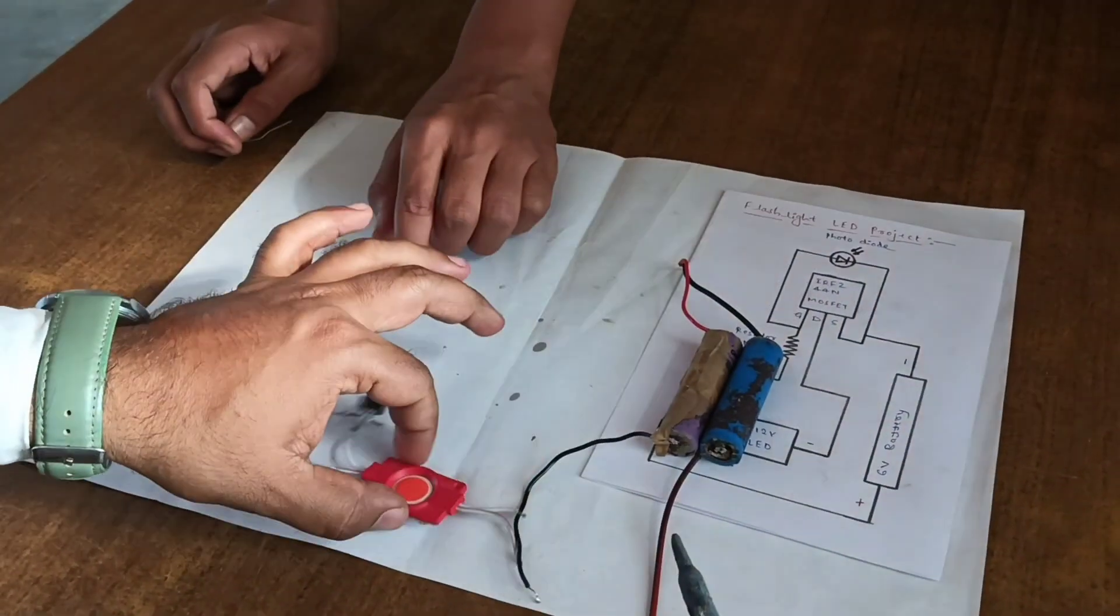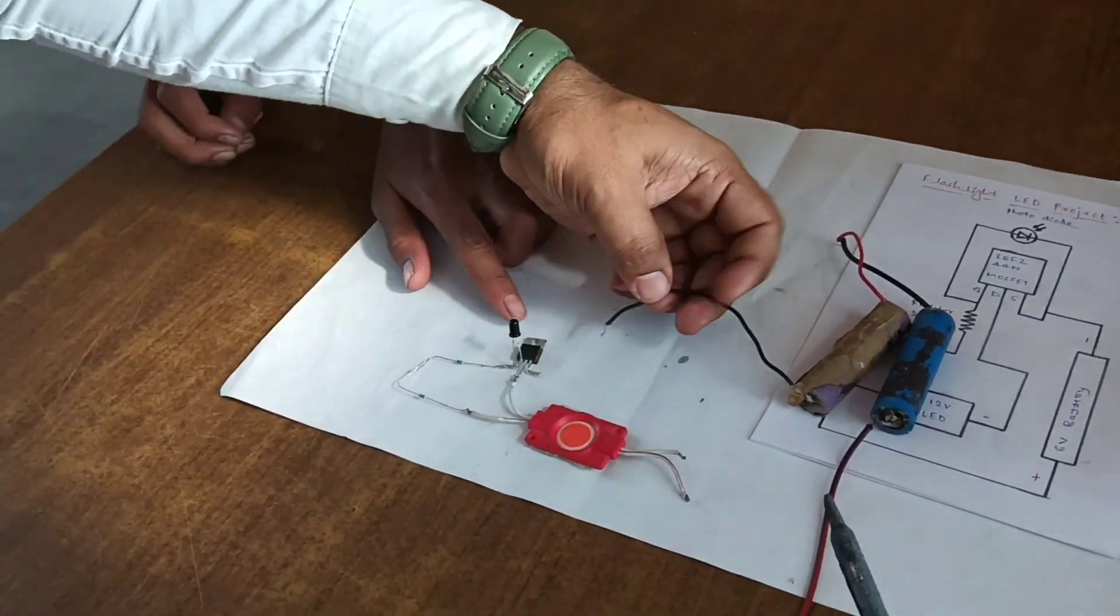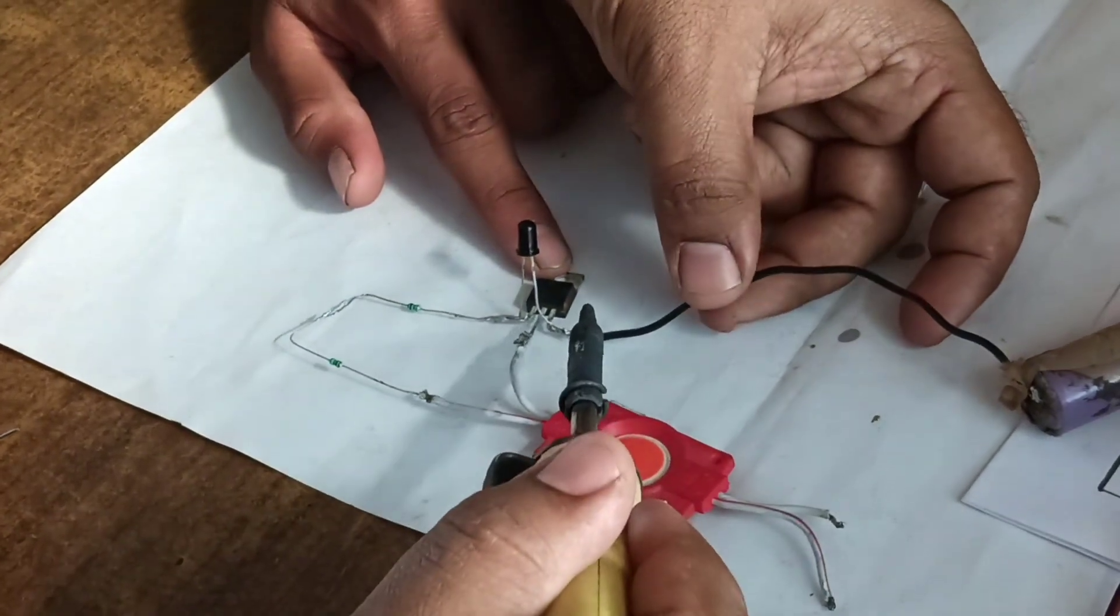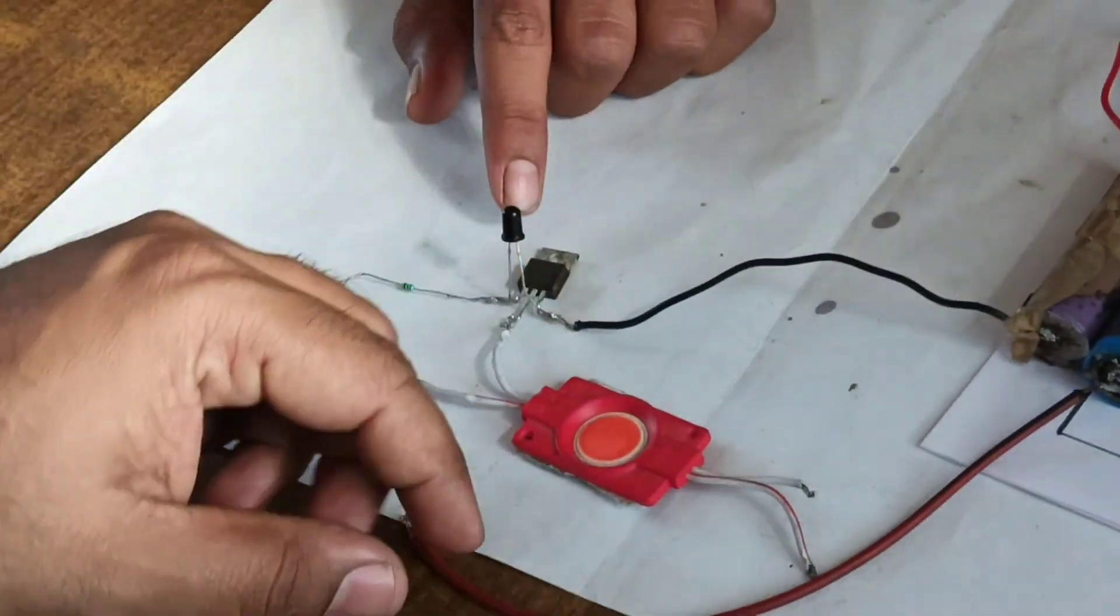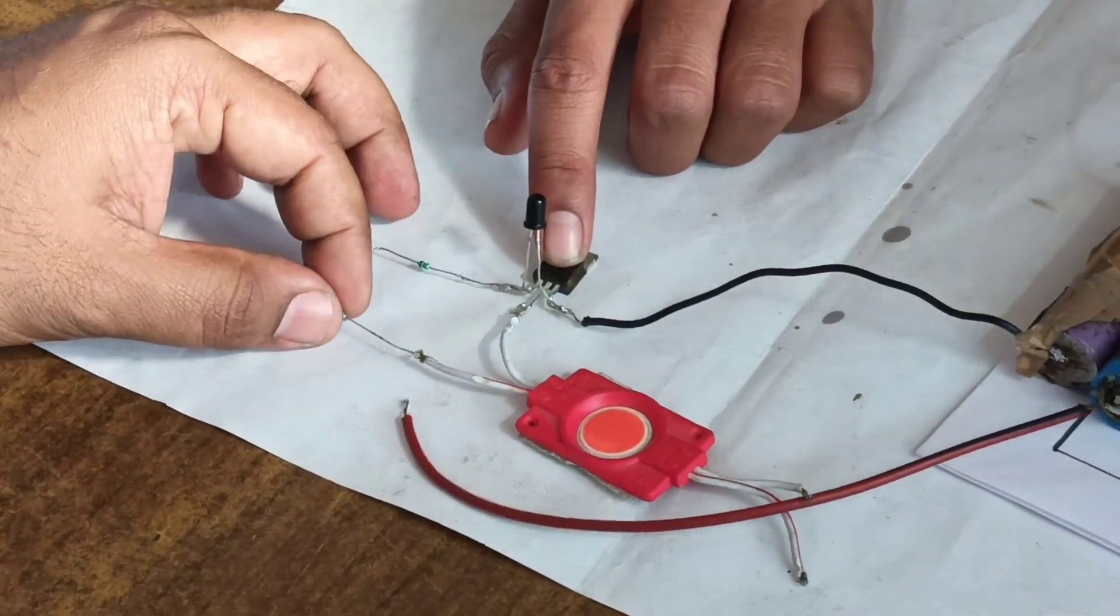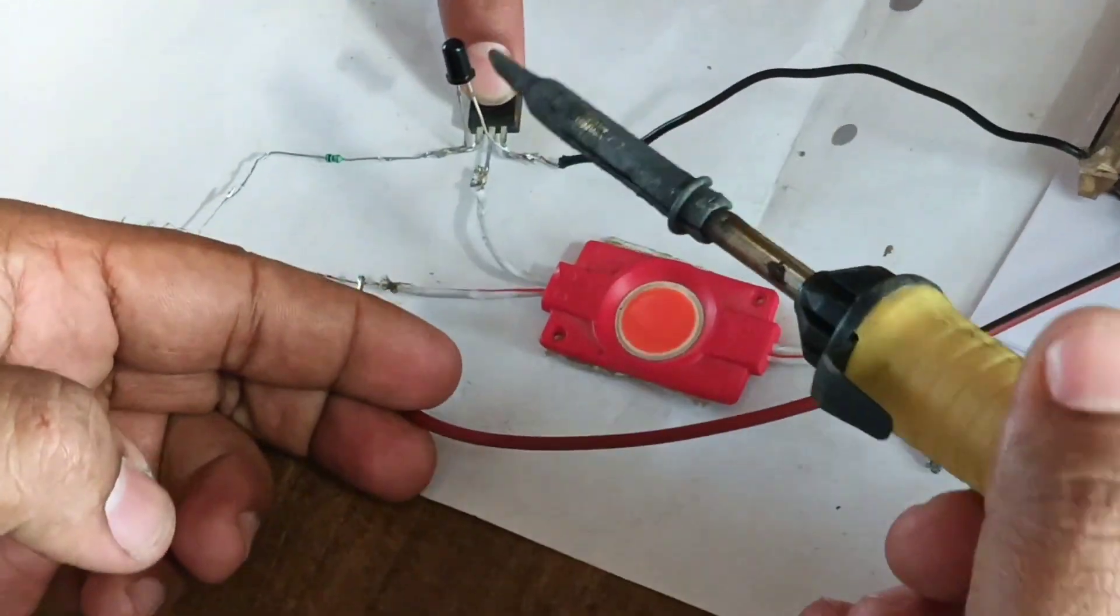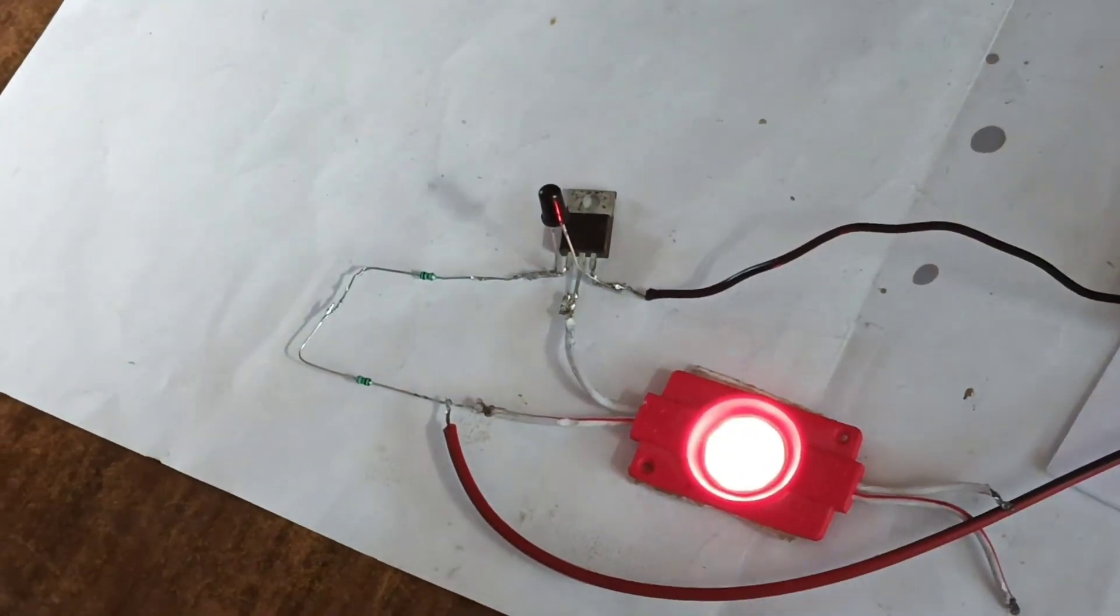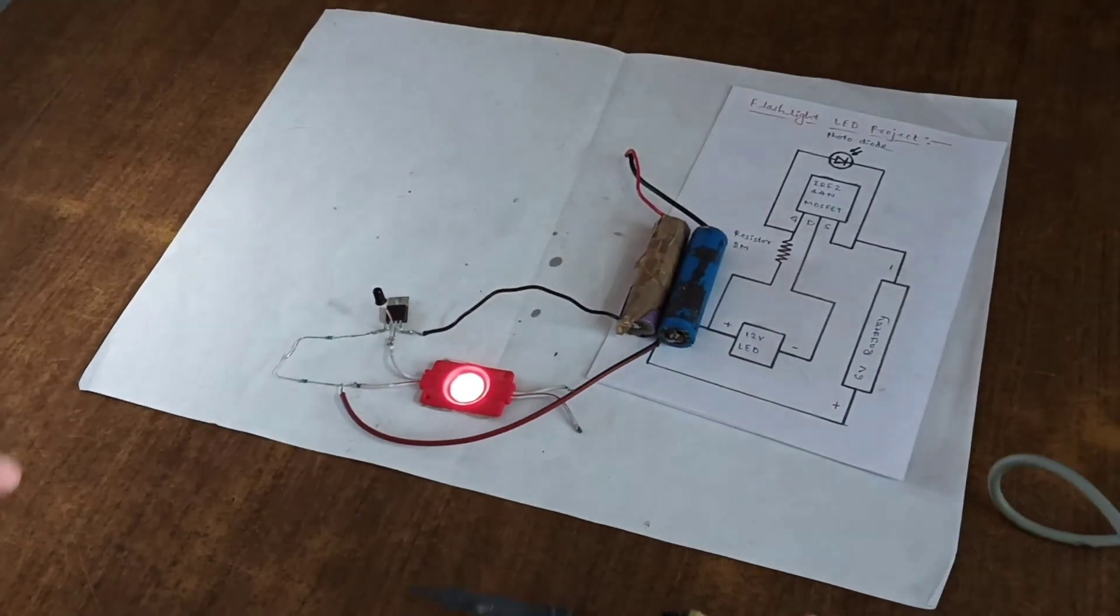Negative of 6 volt battery to source and positive of 6 volt battery to resistor. This completes the connection.